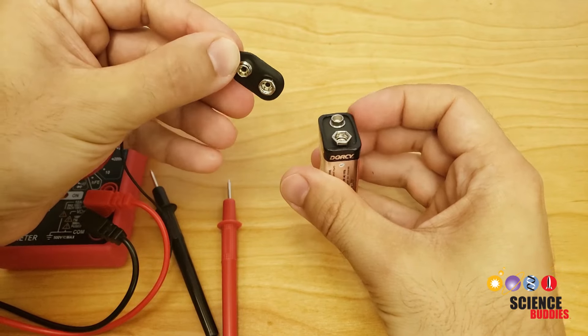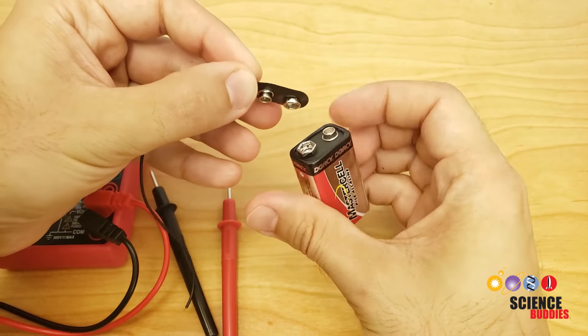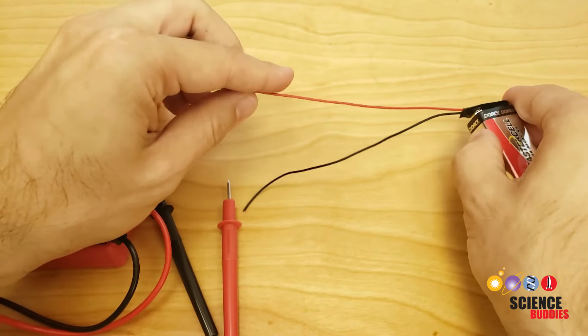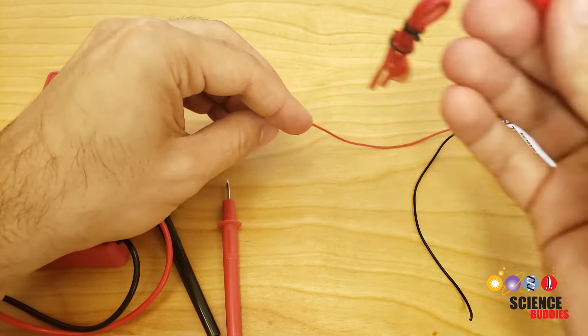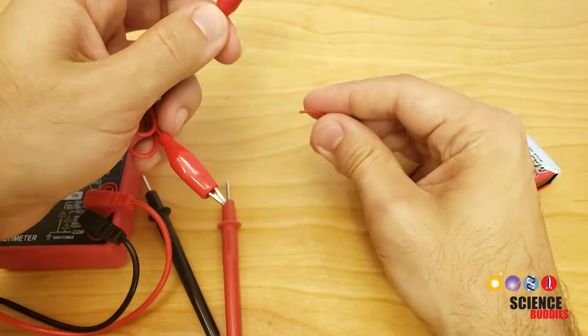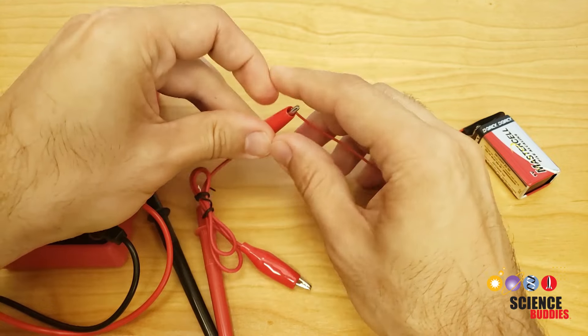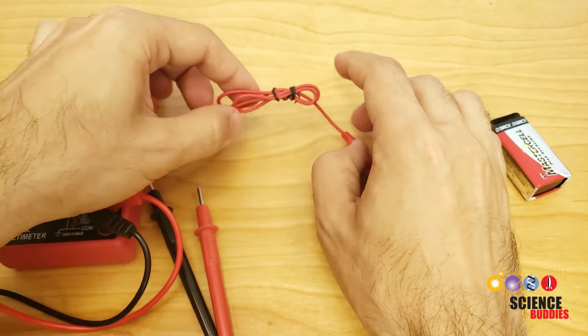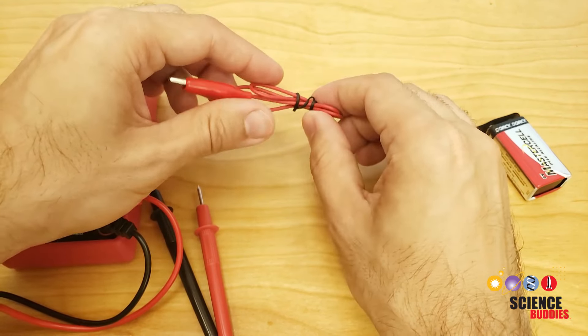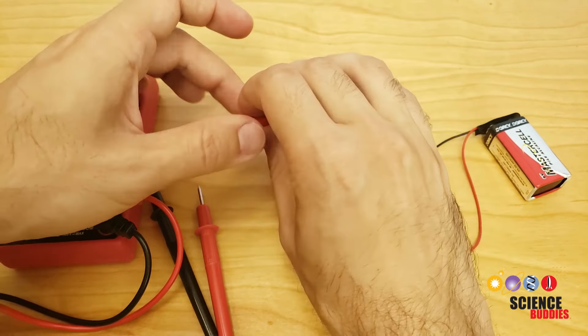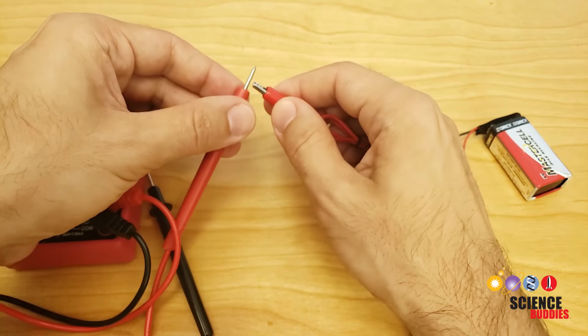Next, take your 9-volt battery and put on the snap connector. Note that the terminals are different sizes, so this connector will only fit on the battery one way. And then you are going to take one of your alligator clips and use it to connect the red or positive wire from the battery to the red or positive lead from your multimeter. Note that I have used twist ties to bundle up the alligator clip cable here to make things a little less messy. That is optional, but you can do that if you find it helps you make things neater.